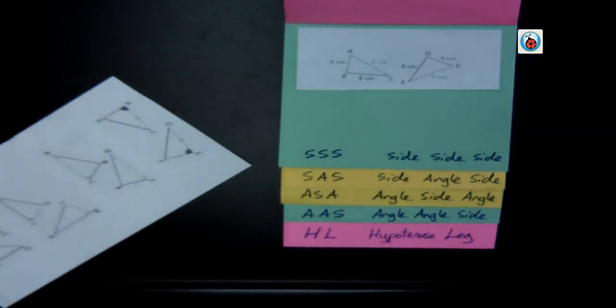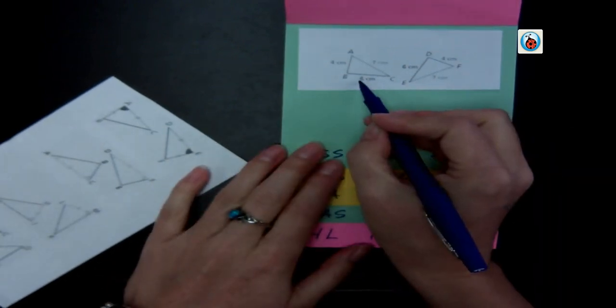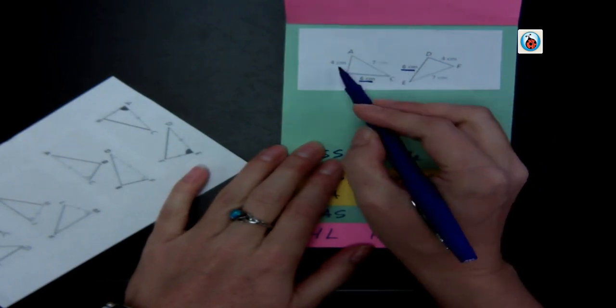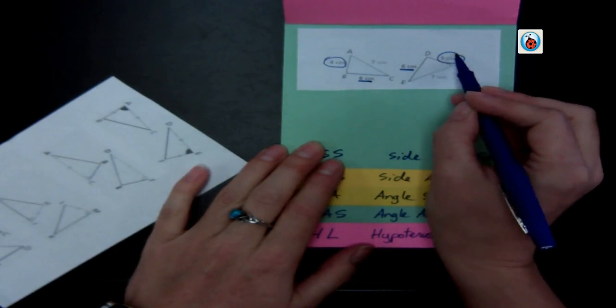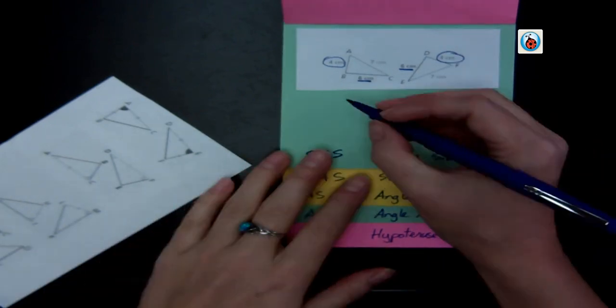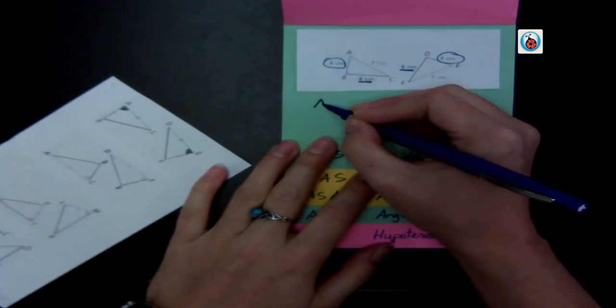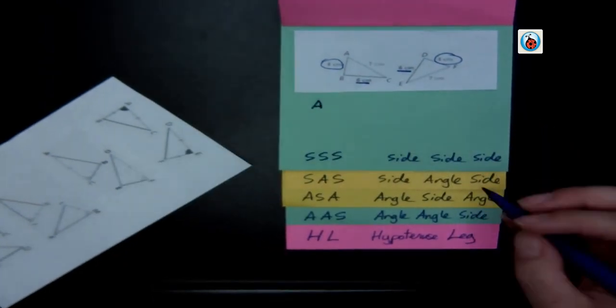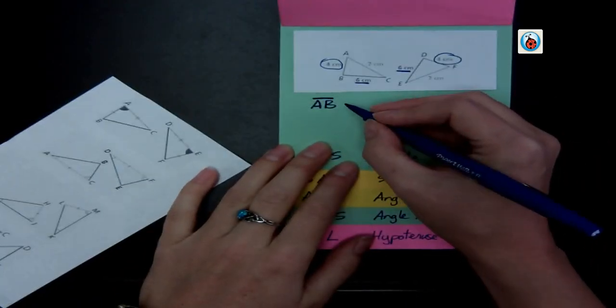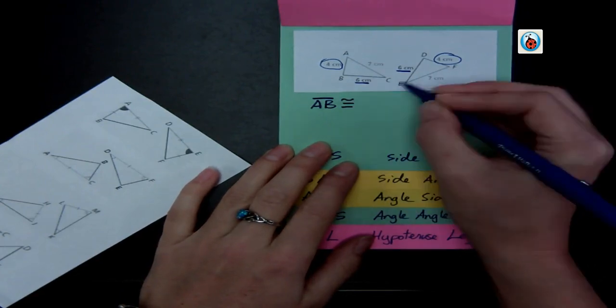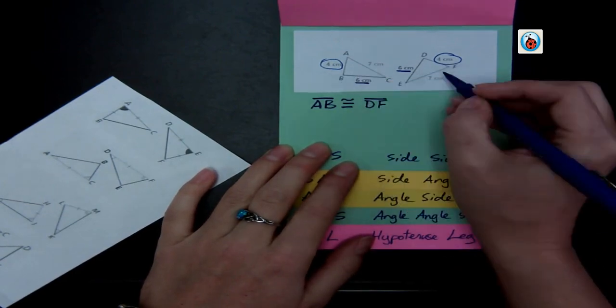And now I'm going to write my congruence statement. So I know these are sides because they're all labeled for me. Six centimeters, six centimeters, four and four, seven and seven. And so I just have to mark which side goes with which side. And so I list out my four centimeters is AB, and so AB is congruent to DF because those are the sides that both have four centimeters.